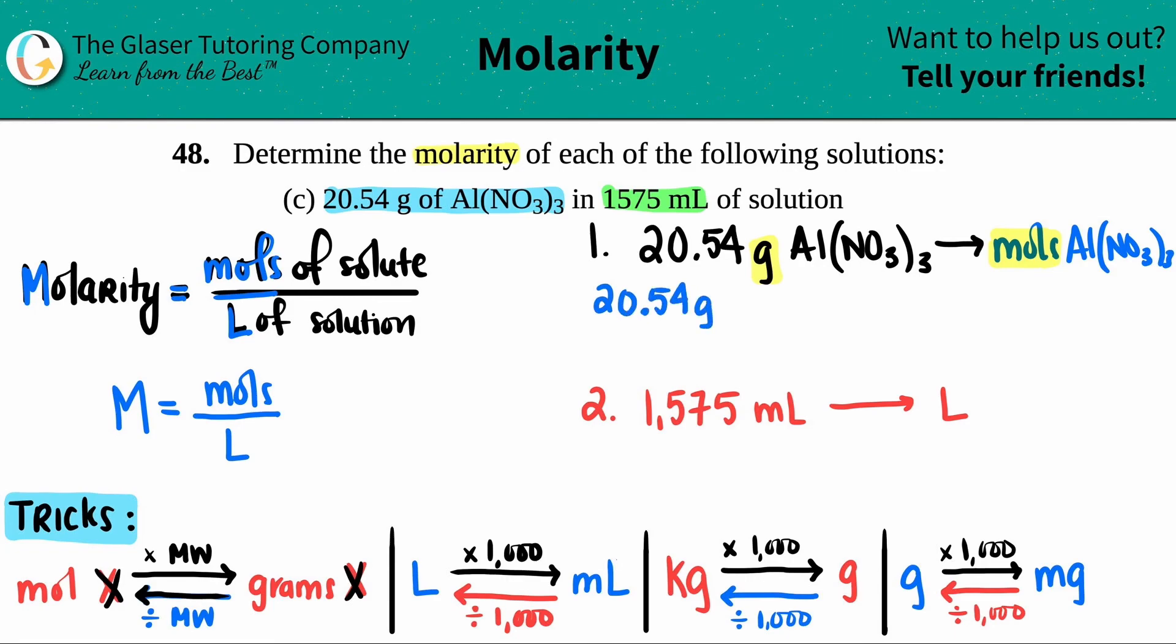And if I wanted to do just grams divided by the molecular weight, that would go on the bottom here. But the thing is, I don't have the molecular weight. They didn't tell me what the molecular weight was, so we have to find it. We have to find the molecular weight of Al(NO3)3.